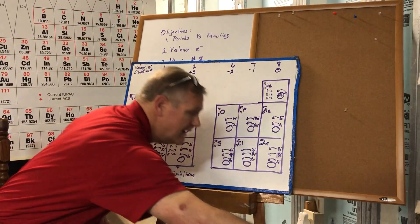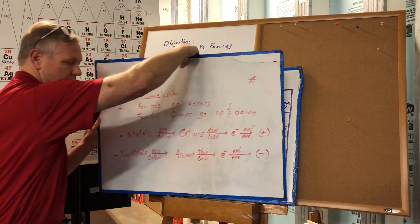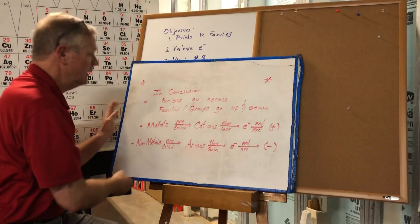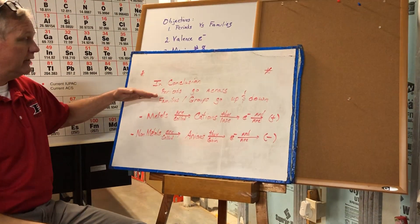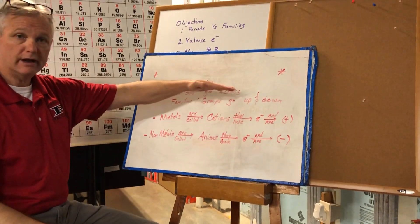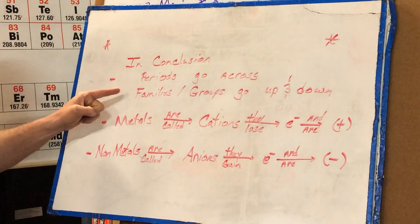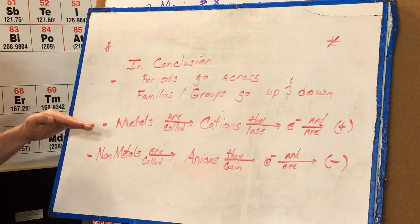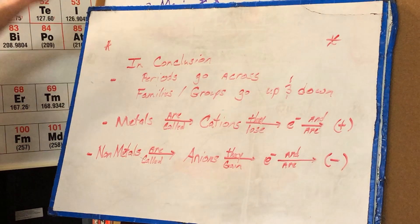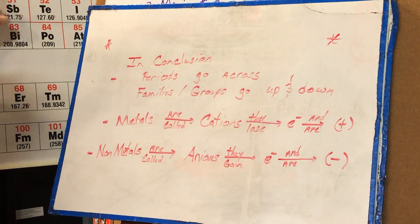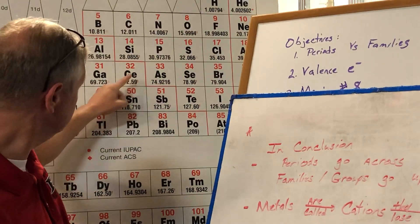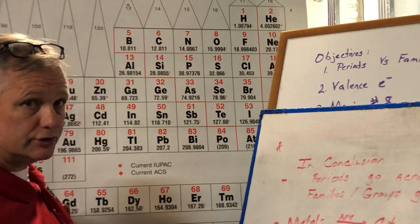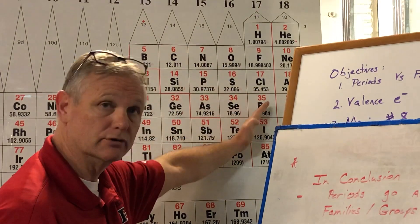So let's go back in and let's wrap this up. In conclusion, periods go across the periodic table. Families or groups go up and down the periodic table. If you start looking at metals, we already talked about the stepping stone on the periodic table. That stepping stone divides it into the metals to the left, non-metals to the right.